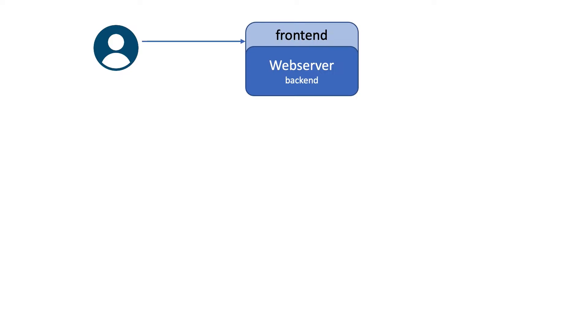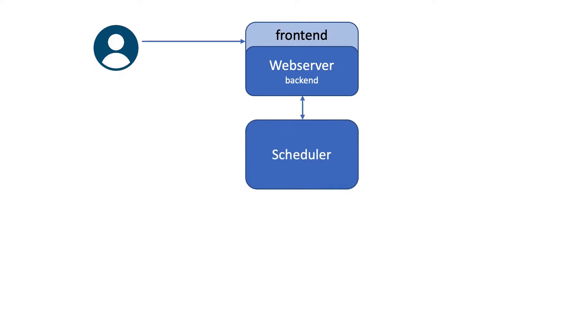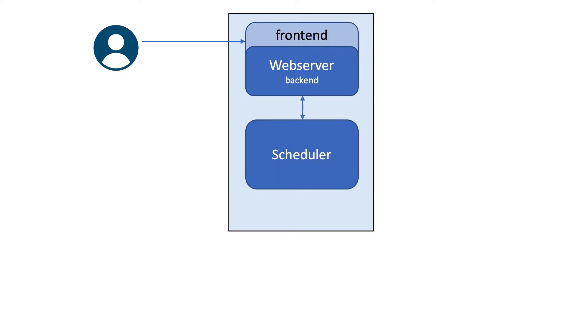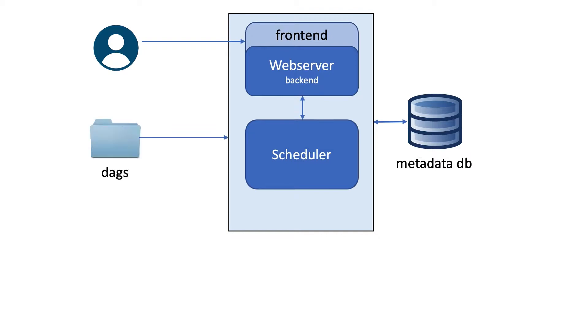Starting off with the user who initially wants to view and monitor the running DAGs and tasks, they will hit the front end of the web server, which is connected with the scheduler, and they both have access to the metadata database. Both web server and scheduler have access to the DAGs directory where they can retrieve the DAGs code, by which the user is able to view, manage, and monitor all of the DAGs in one place.